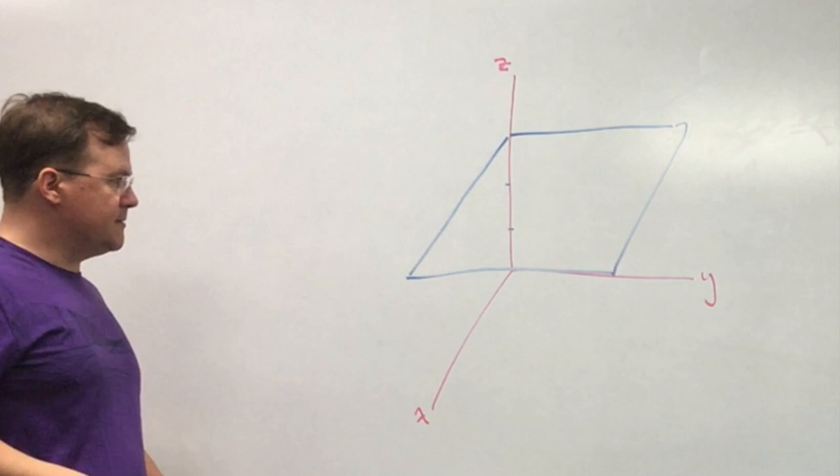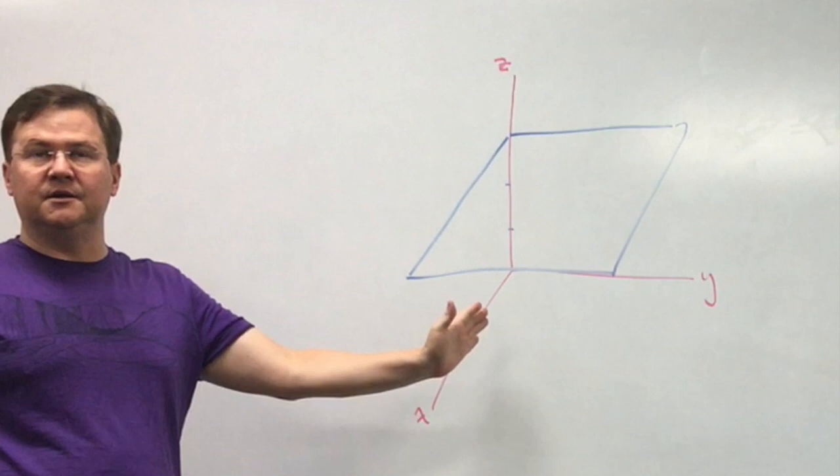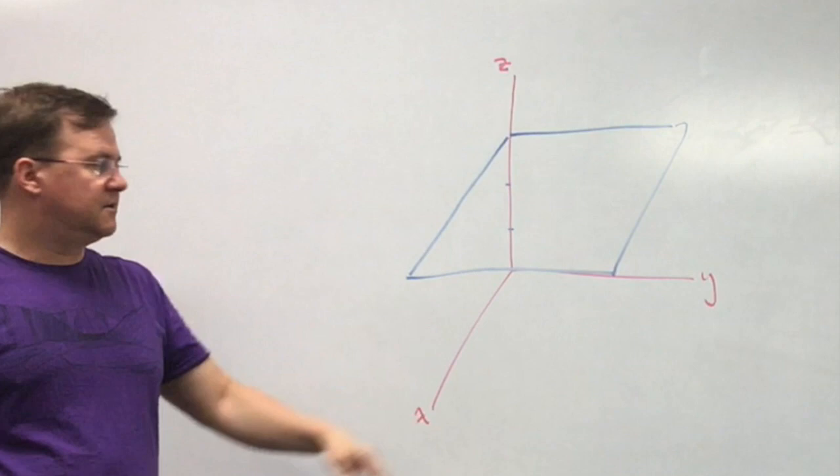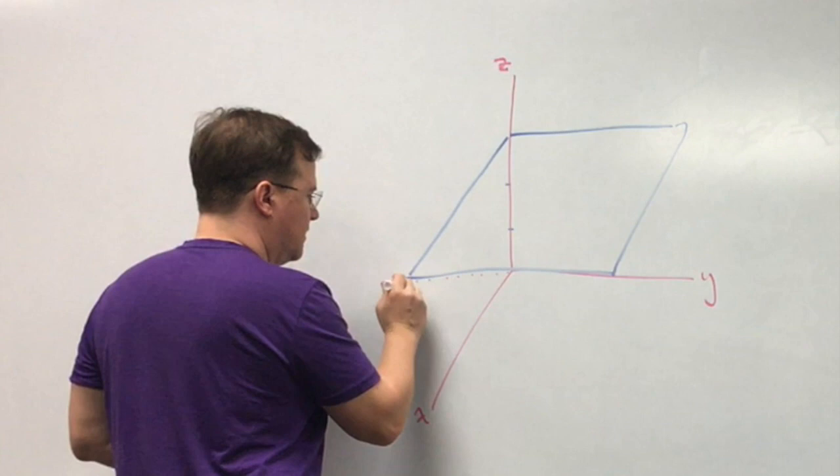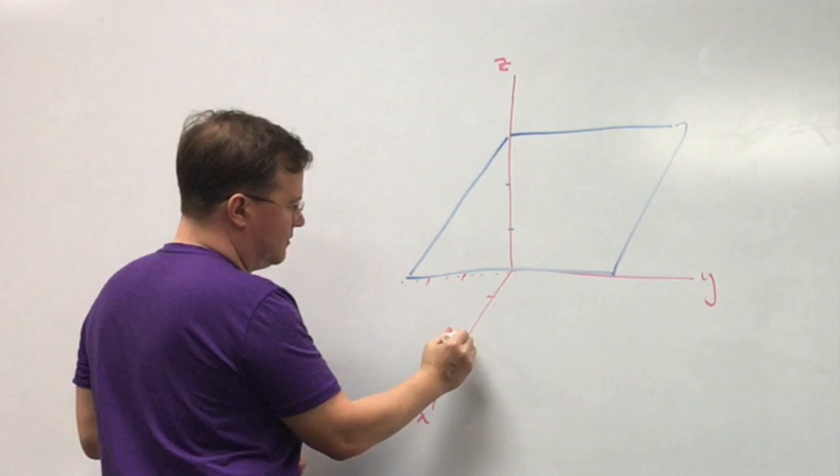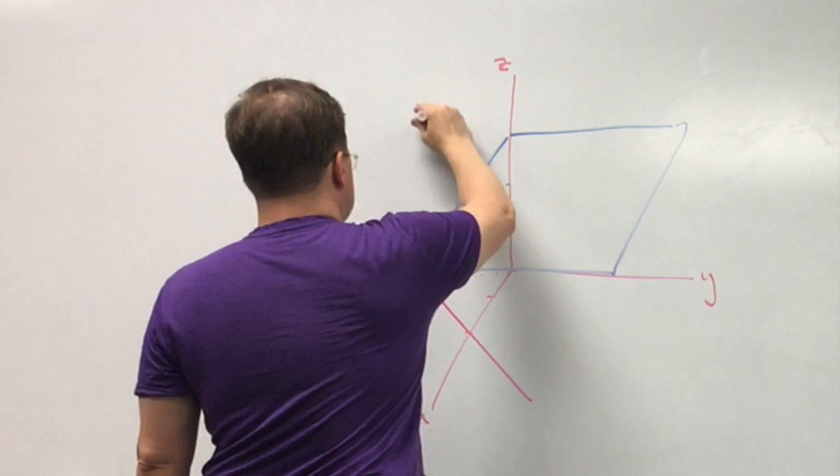But we also have this plane in the xy-plane — it's really a plane for every value of x and y — given by y equals x minus 2. That means it hits the y-axis over here at negative 2 and comes through here at positive 2, something like this.